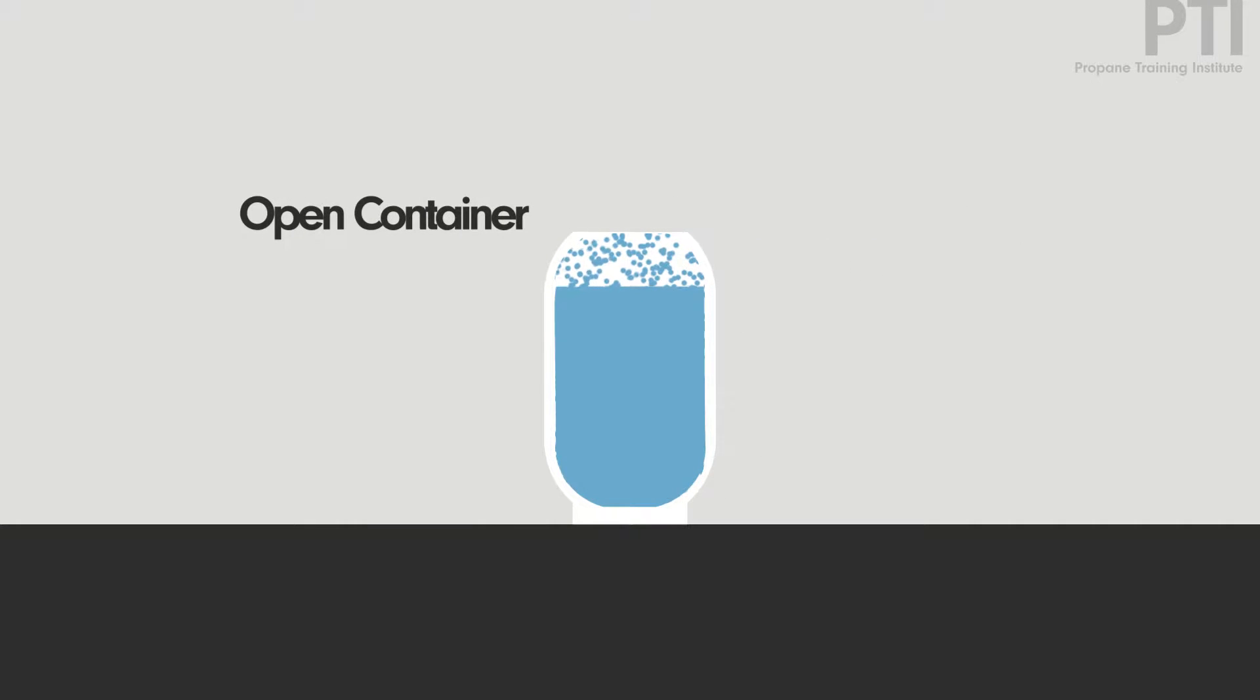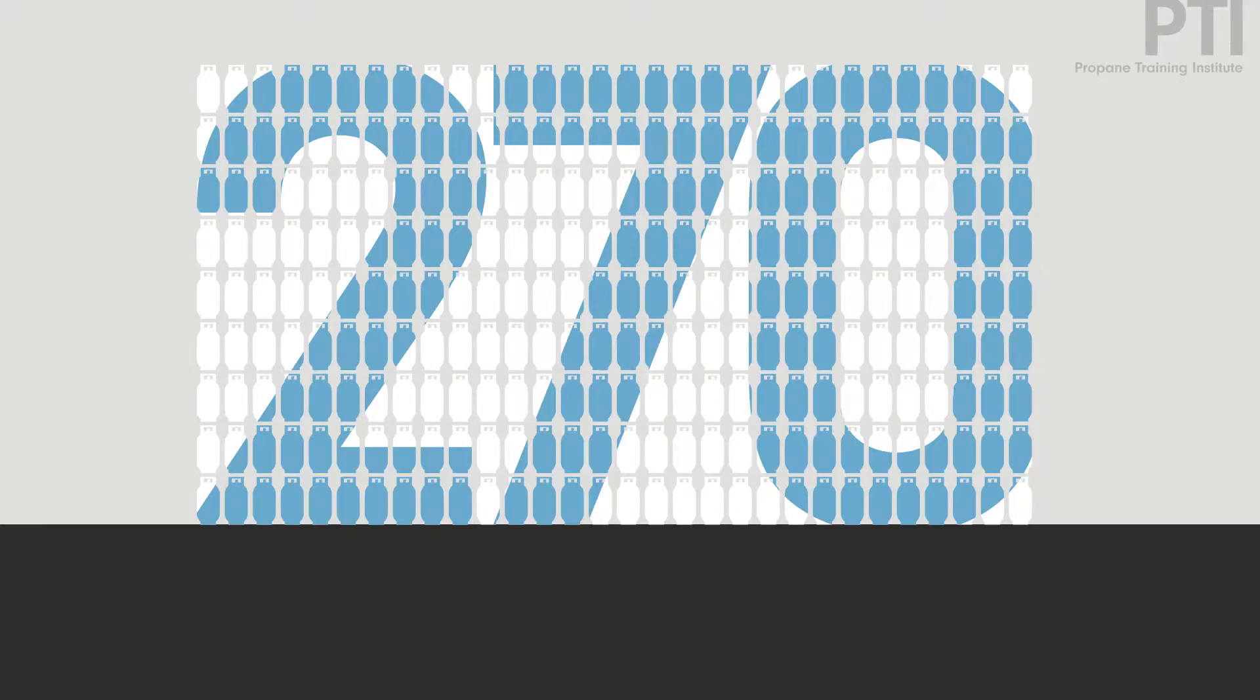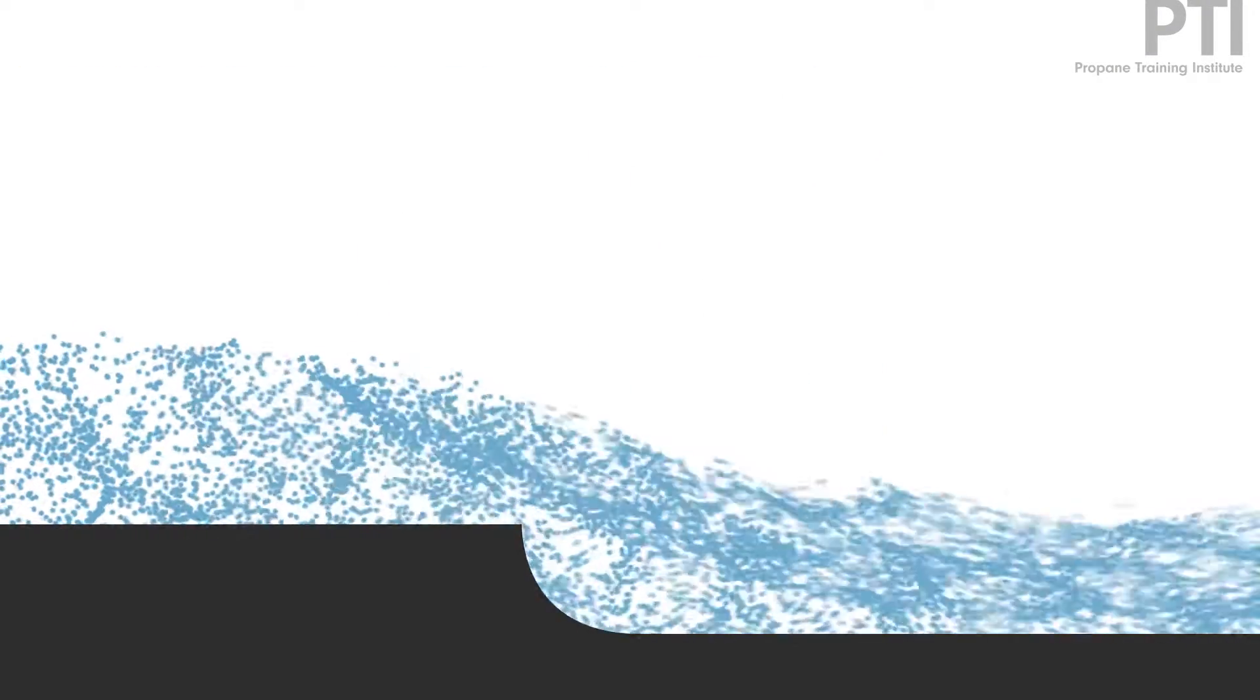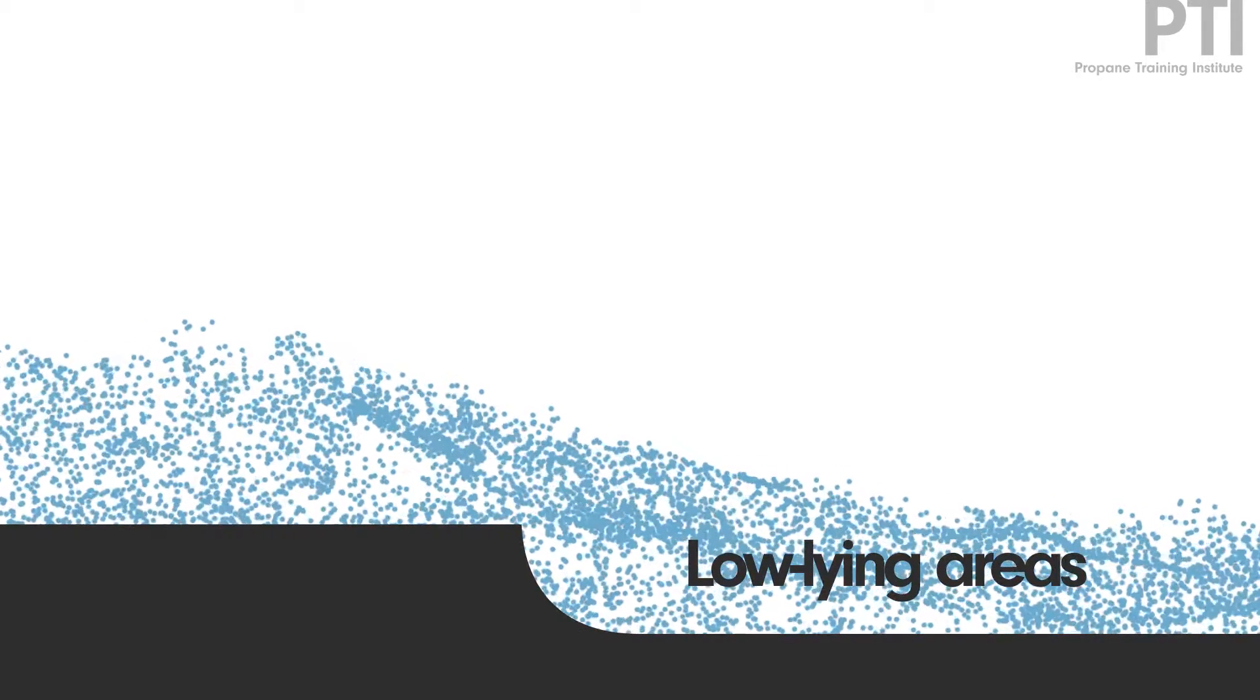Liquid propane in an open container will rapidly evaporate into a gas. Propane will expand 270 times its liquid volume, displacing the surrounding air. Being heavier than air, it flows outward and into low-lying areas.